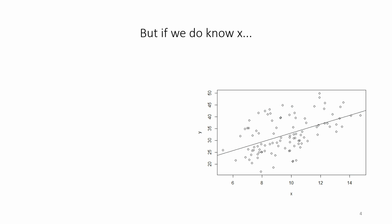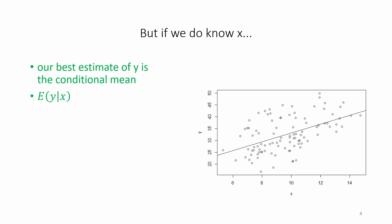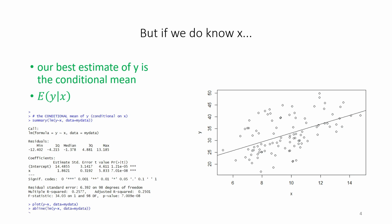In the case where we do know x, our best estimate of y is the conditional mean, which is the expected value of y conditional on x. The graph now shows a fitted line from OLS linear regression of y on x. Looking at the regression output, we can see that y is positively associated with x. The coefficient on x is 1.86 and statistically significant.